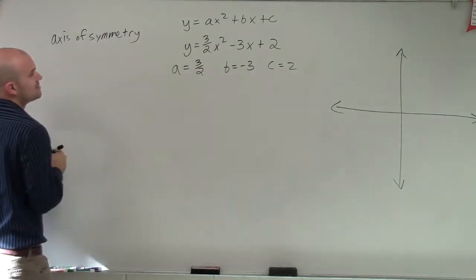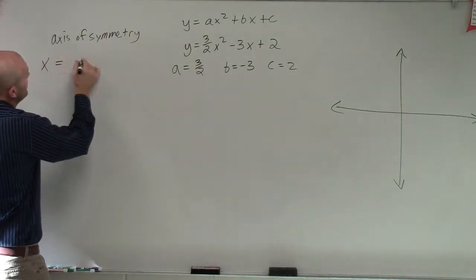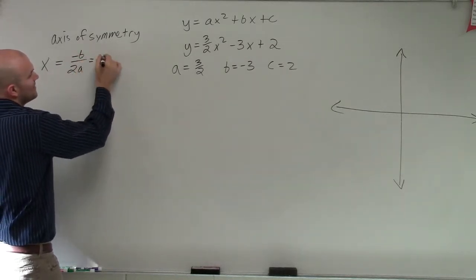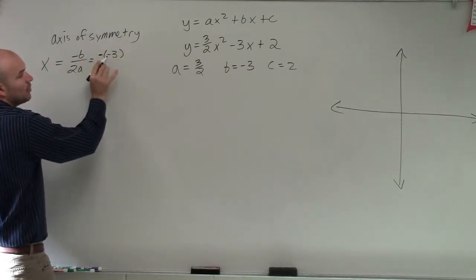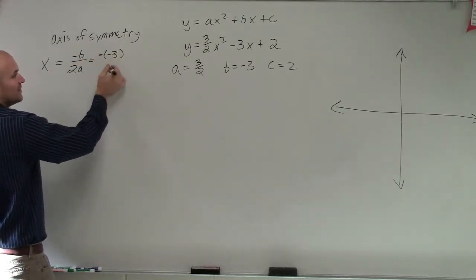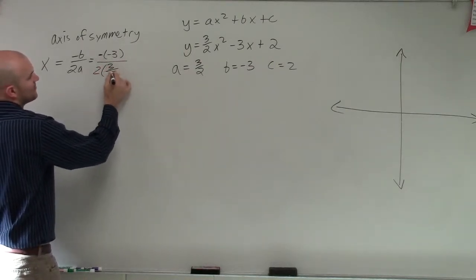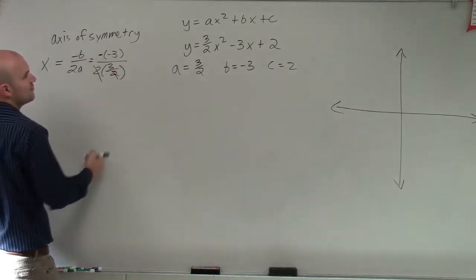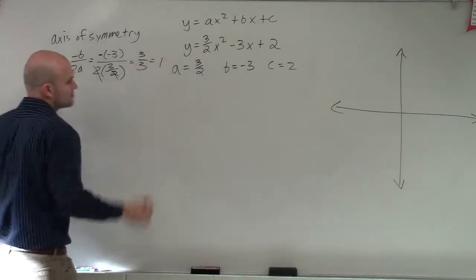All right, so our axis of symmetry is, remember, it's a vertical line. So x is going to equal opposite of b divided by 2 times a. Well, my opposite of b is going to be a negative. So it's opposite of b. Well, b is negative 3. So it's opposite of b, which is negative 3, divided by 2 times a, which is 3 halves. Now, this is nice because the 2 times 3 halves, those are going to divide up to 1, and I'm just going to be left with a positive 3 over positive 3, which equals 1.